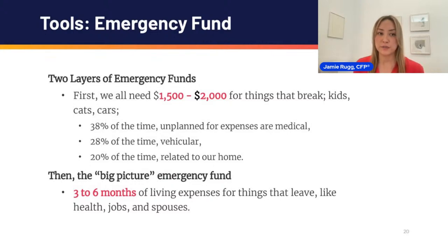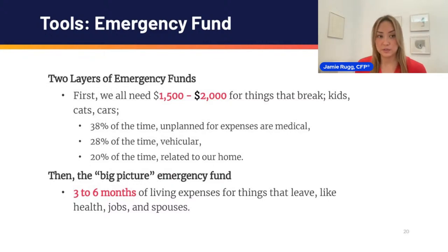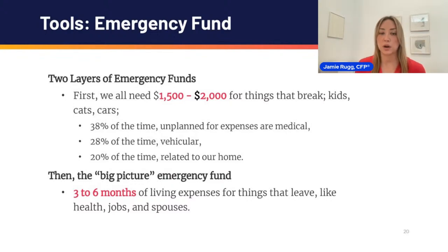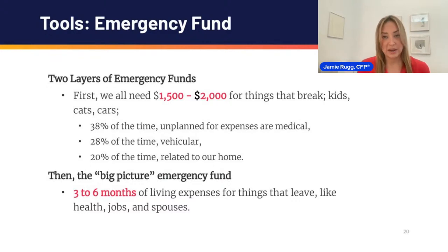There are two layers of the emergency fund. First, we all need a minimum of $1,500 to $2,000 for things that break — sudden injuries, fender benders, something that doesn't work in your car. Statistically, 30% of unplanned expenses are medical, 28% are something with the car breaking down, and 20% are related to the home. That's why we want to have at least a minimum amount for those unexpected things. Then think of the bigger picture — that three to six months of expenses for things that leave unexpectedly, like jobs and spouses.